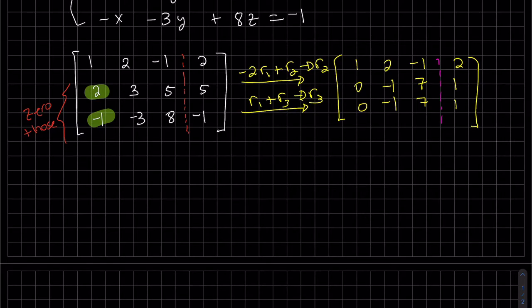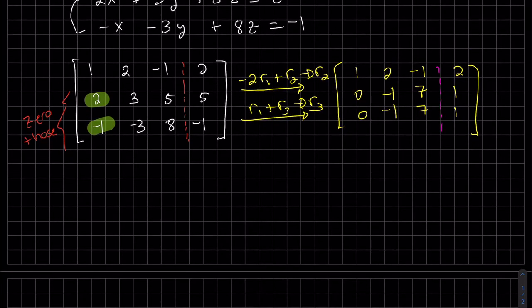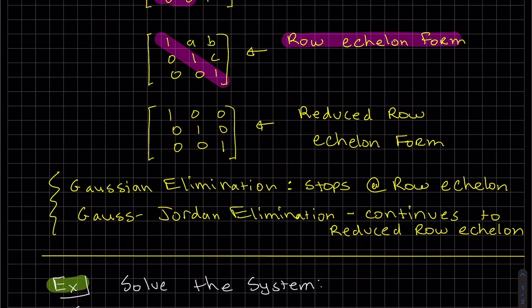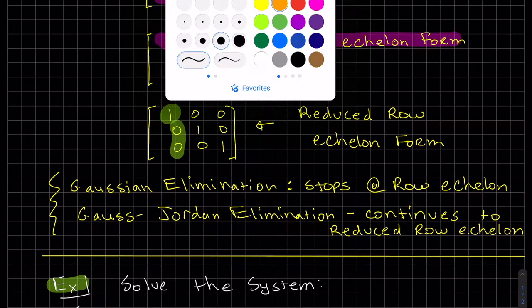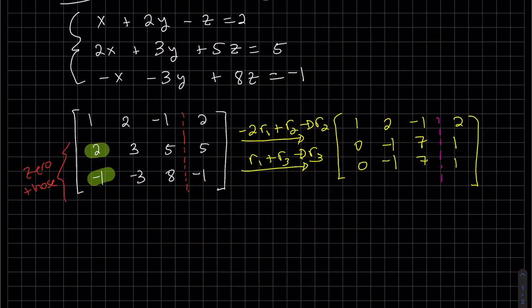Now that we've zeroed those two out, if we're going to follow the algorithm carefully, the goal is to get a one here first and then zero those out. Then we want a one there and then you'll zero these two out. Then you'll get a one here and zero those two out. So that's the algorithm.